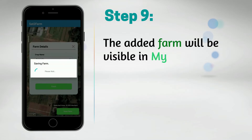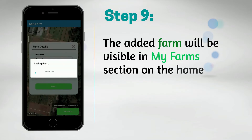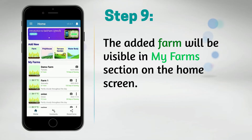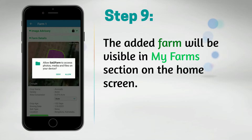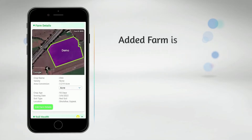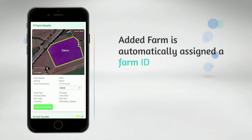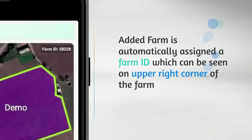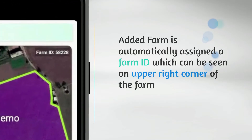The added farm will be visible in the 'My Farm' section on the home screen. Once the farm is added, your farm ID will appear in the right corner. You can fetch your farm details through the mobile app using the farm ID.